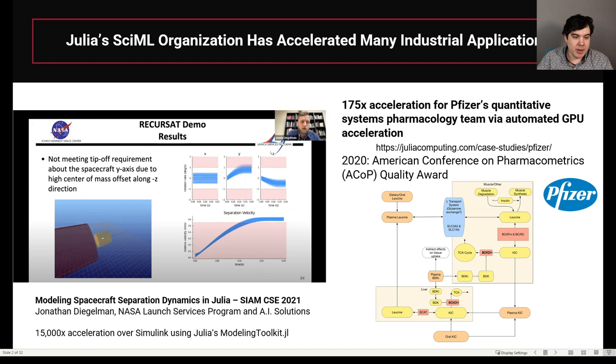We actually recently received an award for working with Pfizer in 2020 for accelerating their preclinical processes by 175x by making their differential equation simulations automatically transform onto GPU. These showcase that what we'll be testing against is already something that is giving you orders of magnitude speedup over MATLAB, Python, or even the C sundials library. So we're already starting from a very high baseline of what fast means.